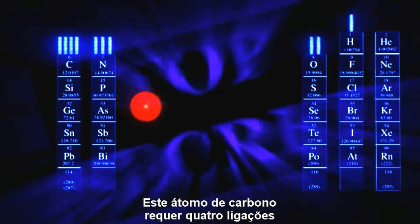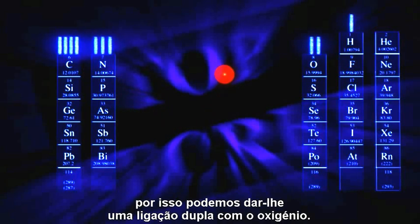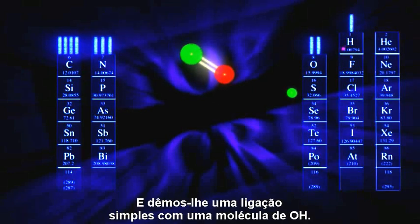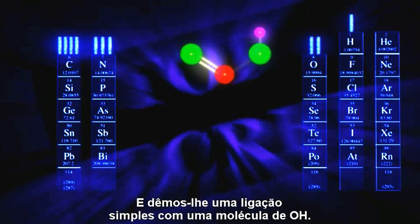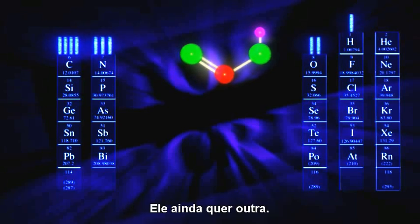This carbon atom wants to make four bonds. So let's give it a double bond with oxygen, and let's give a single bond to an OH molecule. That's a total of three bonds for the carbon — it still wants another.